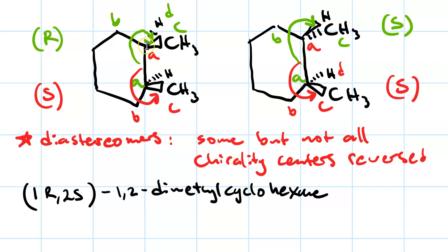So, if we take this carbon as number one and this carbon as number two, then we've got 1R, 2S, 1,2-dimethyl cyclohexane for the molecule on the right. So, we can see that this pair of molecules is a pair of diastereomers because they differ in one chirality center, but not both.